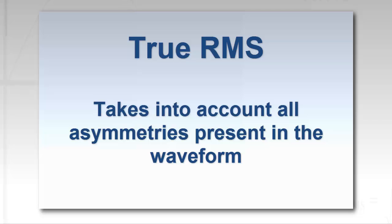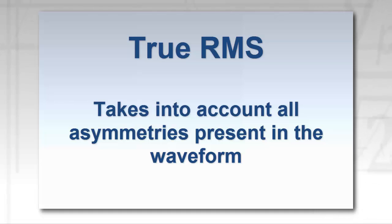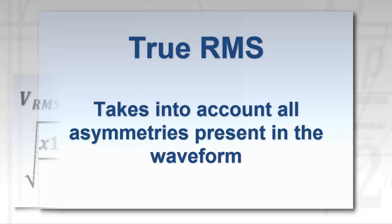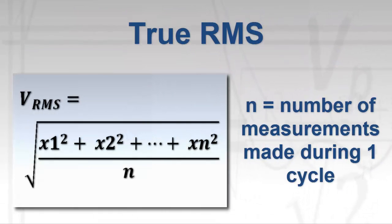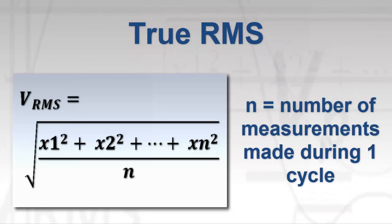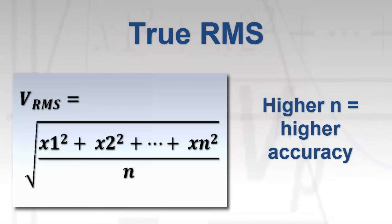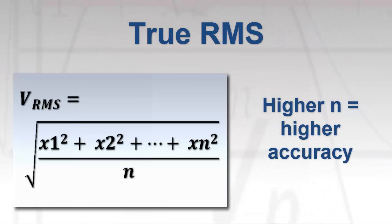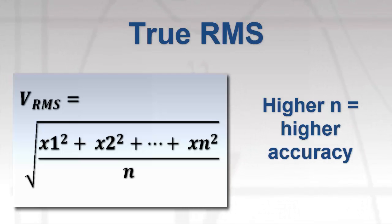True RMS involves a more advanced mathematical calculation that takes into consideration all nonlinearities and asymmetries that may be present in the AC waveform. In this equation, N equals the number of measurements made during one complete cycle of the waveform, or sample rate as it's termed. The higher this number is, the more accurate the RMS calculation will be, because the higher the value of N, the higher the order of harmonics this formula can accommodate.